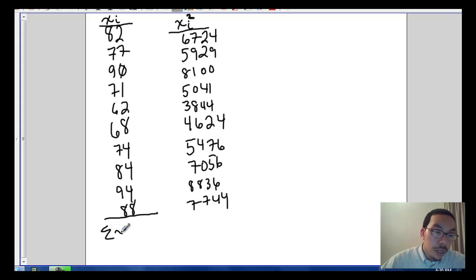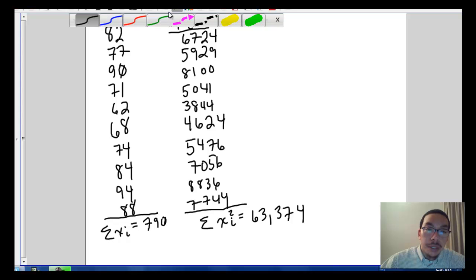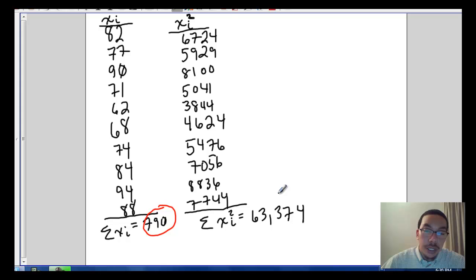Alright, we sum up all the data values, it adds up to 790. And if we sum up all of the x sub i's that we squared, pop these into calculators, we'll get about 63,374. Alright, so let's make note of these two values, 790 and 63,374.